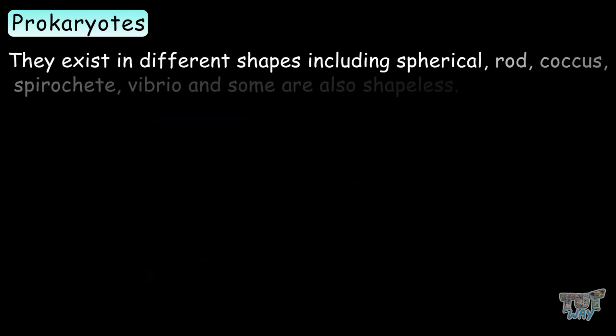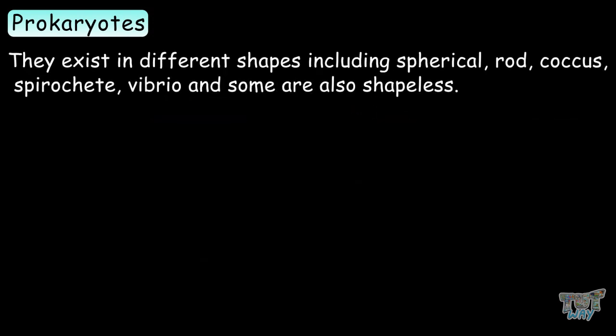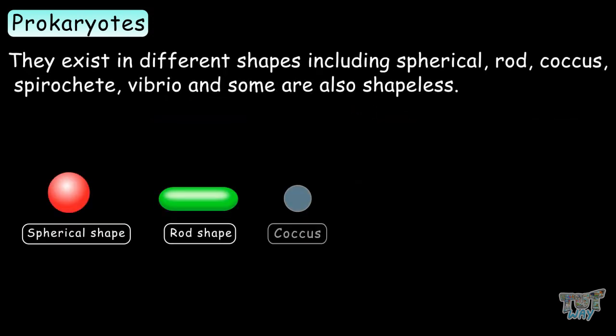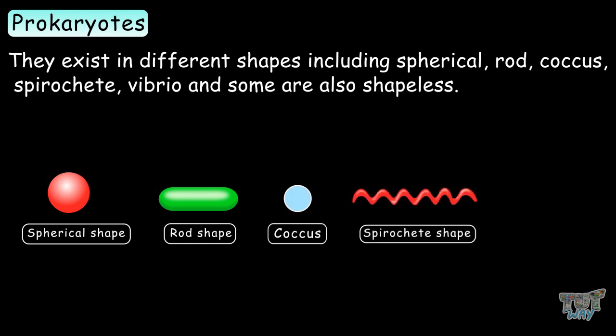Prokaryotes may exist in different shapes including spherical, rod, coccus, spirochete, vibrio, and some are even shapeless.